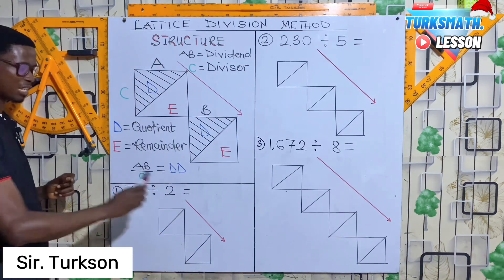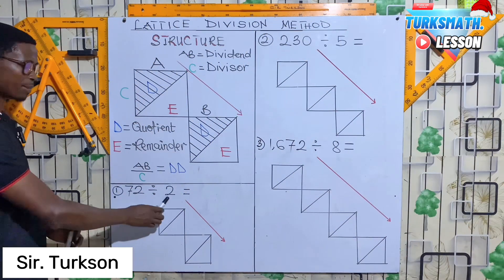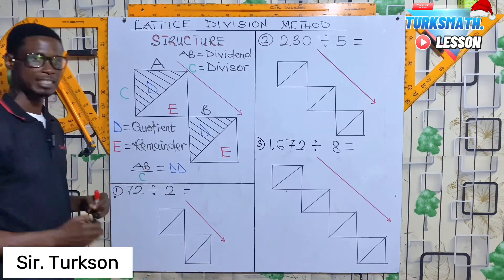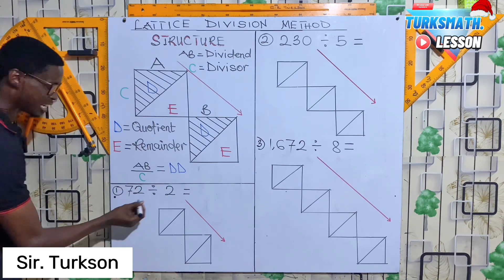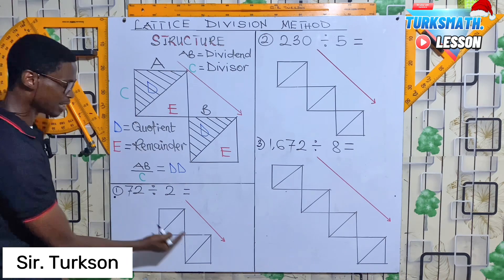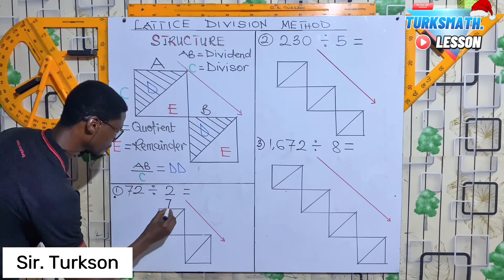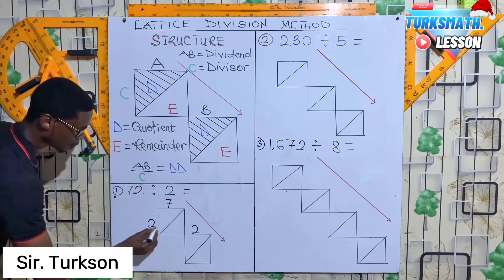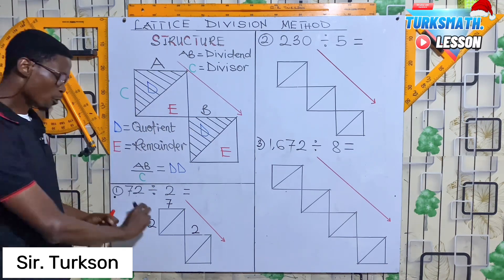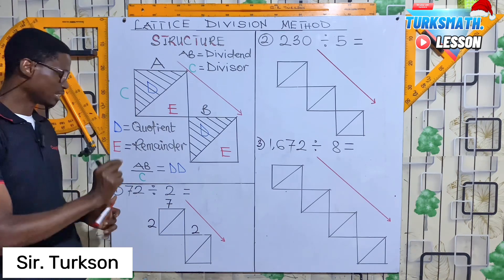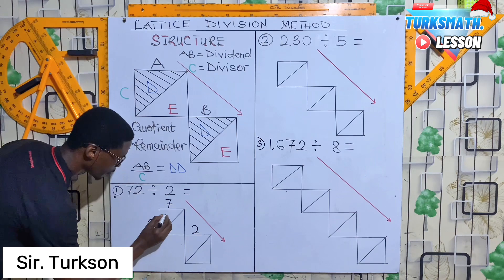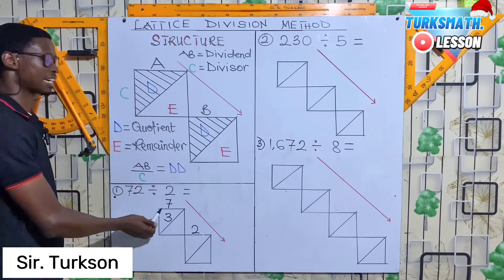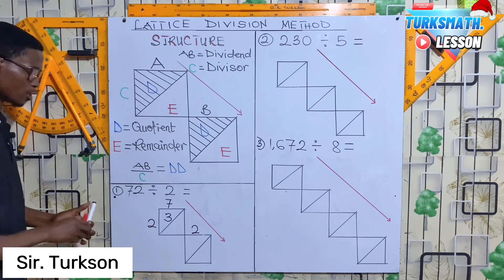Let's look at Example 1: 72 divided by 2. The first thing you do is draw your lattice, then label it. We have two digits, so we need two lattice boxes. The first takes 7 and the second takes 2. Our divisor is 2. Now we divide: how many 2s are in 7? That is 3. Two times 3 gives 6, not 7, so we have a remainder of 1. Write down the 1.